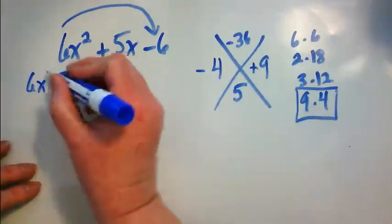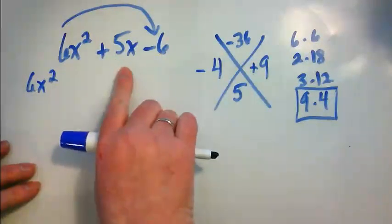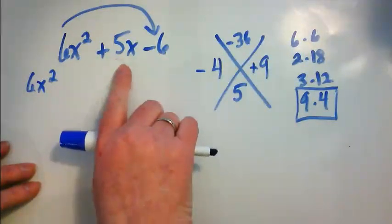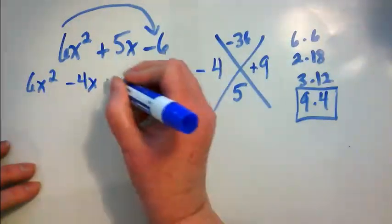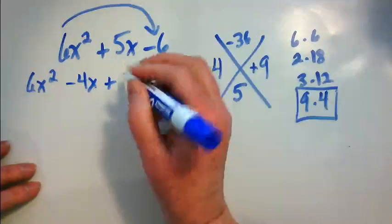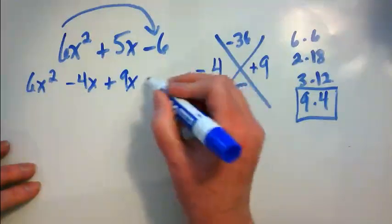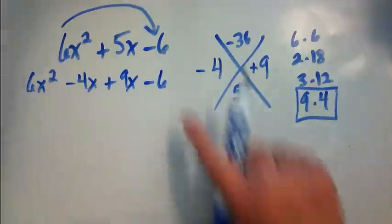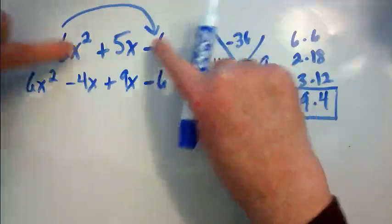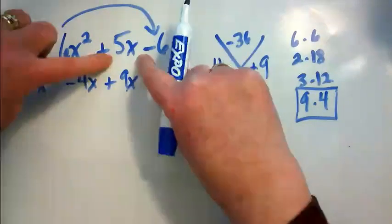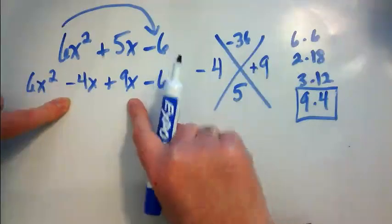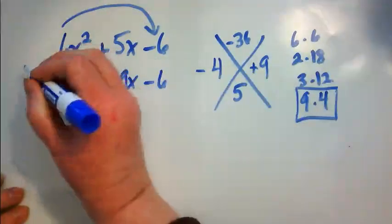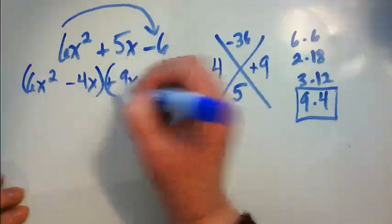So now we've taken our factor pairs, or our X puzzle and figured that out. We're going to come back and rewrite this with the middle term rewritten. Instead of putting 5X, we're going to put negative 4X, positive 9X, minus 6. This is the same as this. This term is combined. Here it's spread out. And we know it's spread out with 4 and 9, because we use this to find them. And now I'm going to group this.